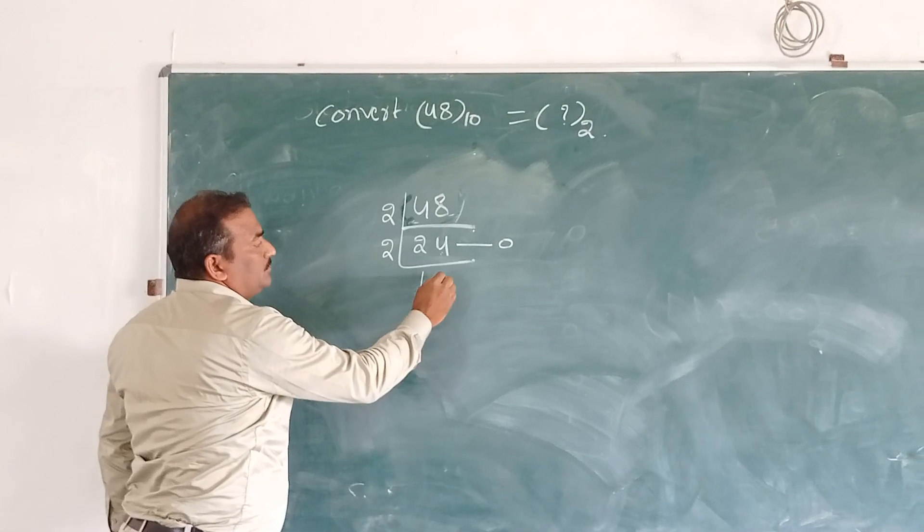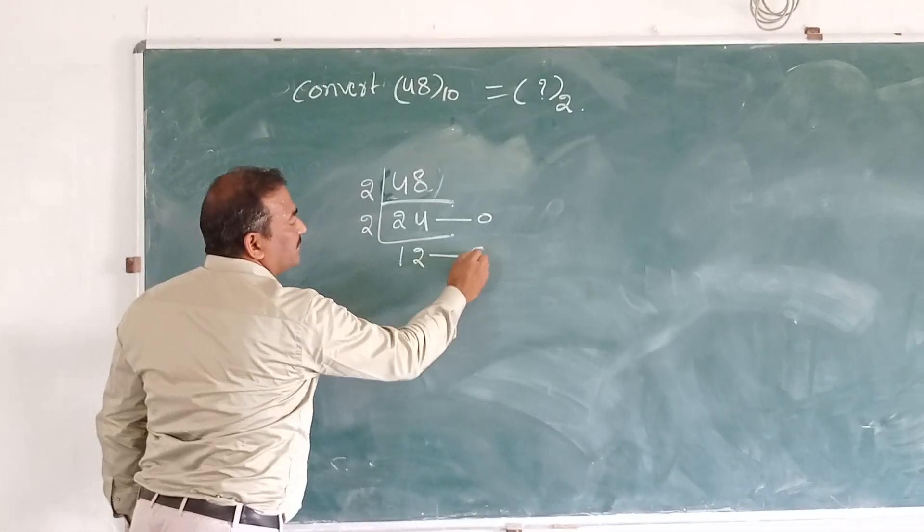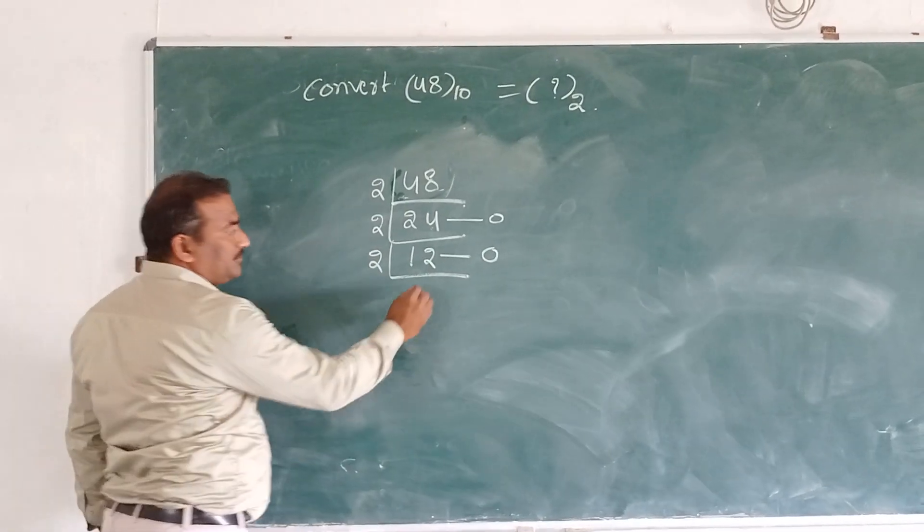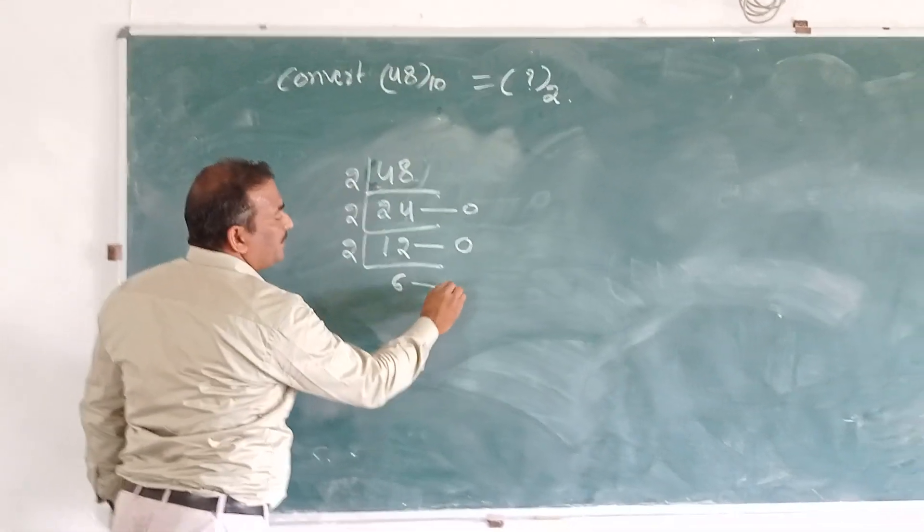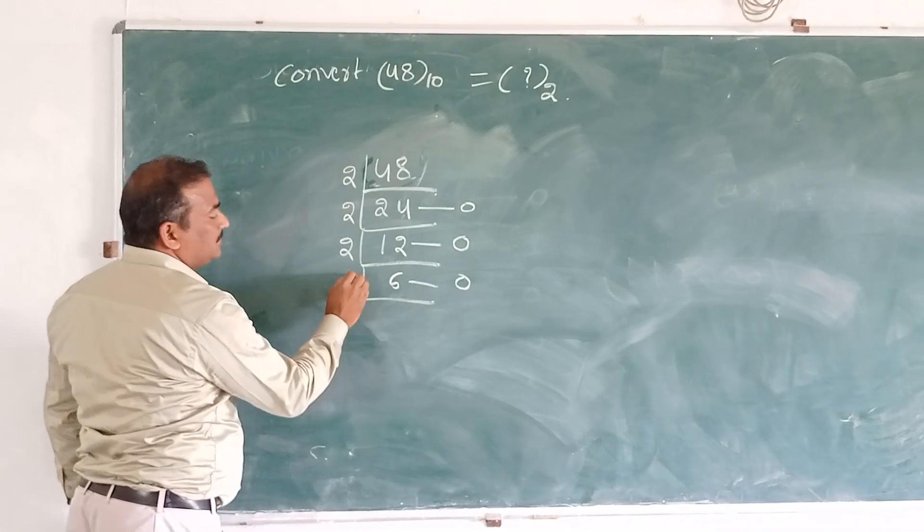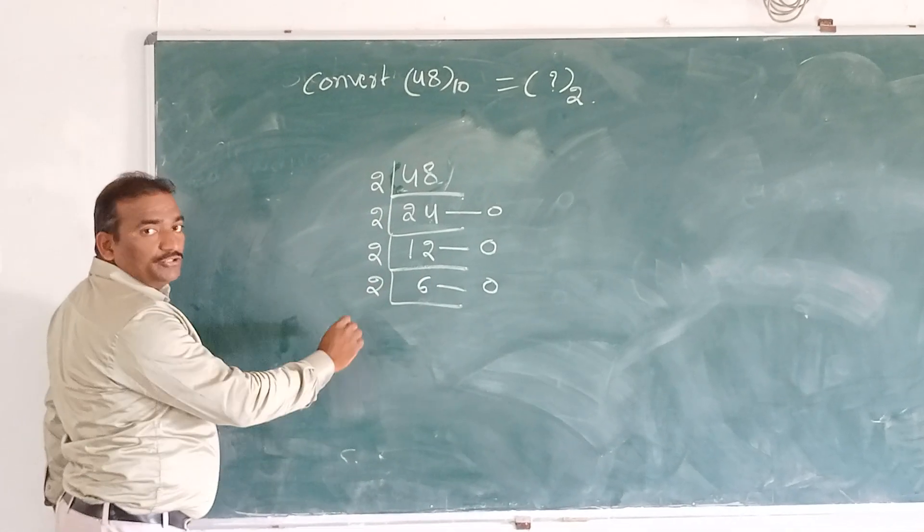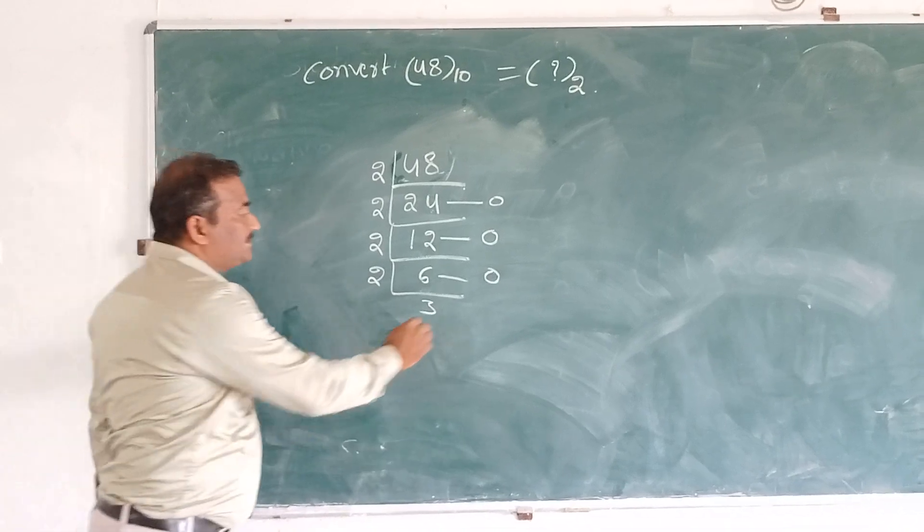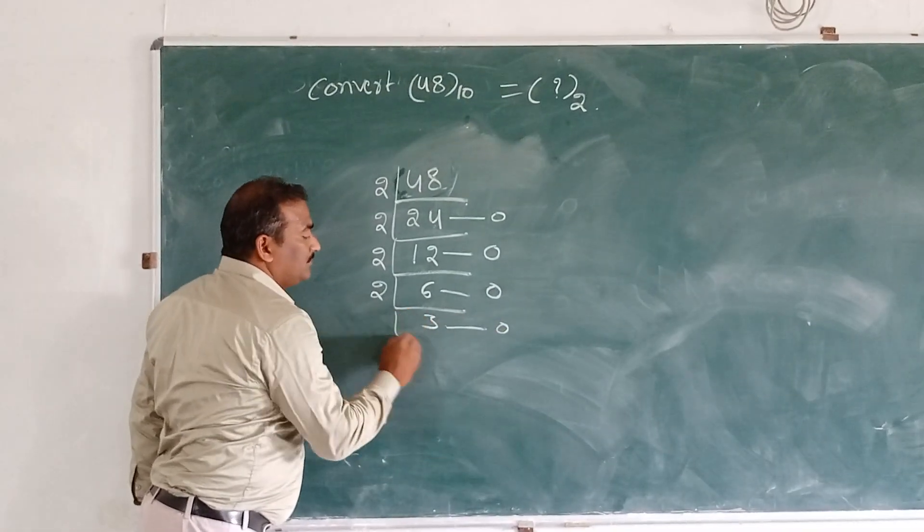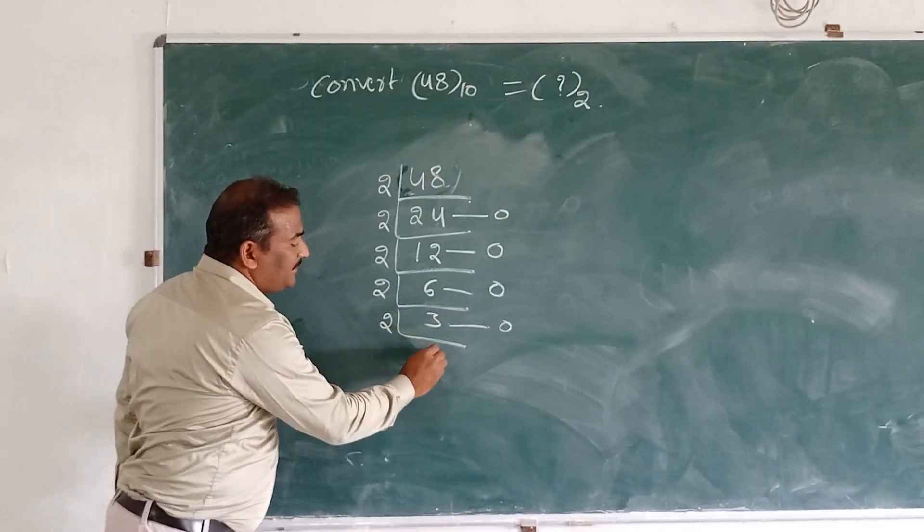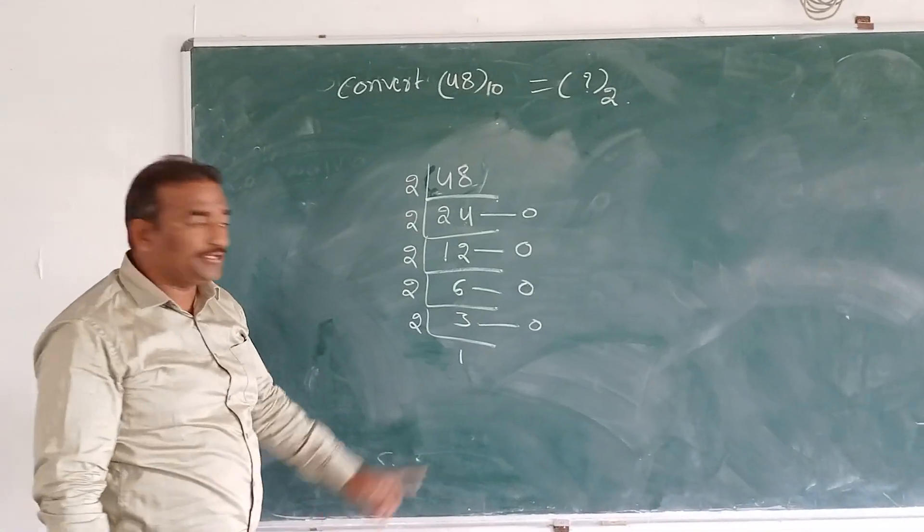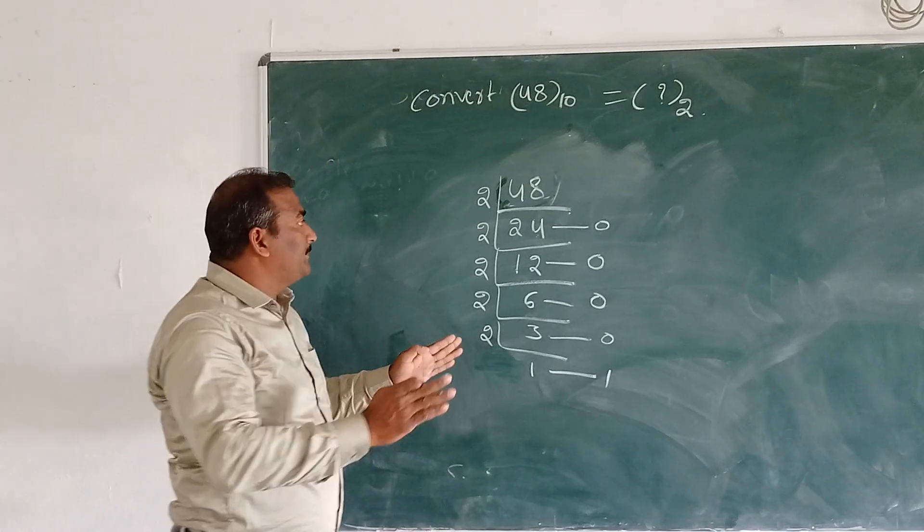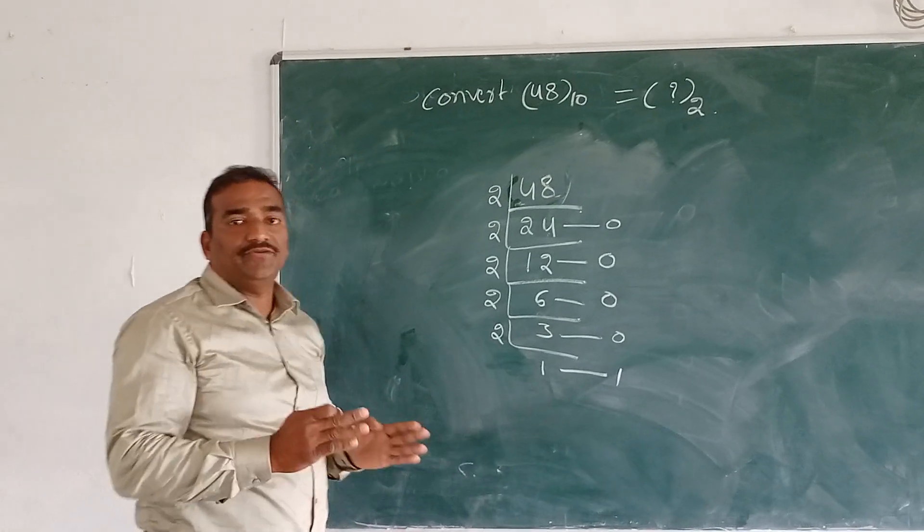equals 12 remainder 0. Next, 2 times 6 is 12, remainder 0. Then 2 times 3 is 6, remainder 0. Next, 2 times 1 is 2, remainder 1. Then we have 1 remaining. So the division of 48 by 2 is complete.